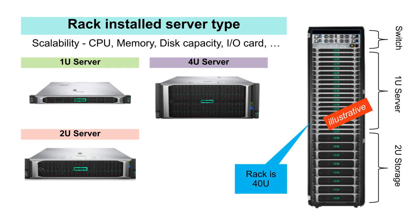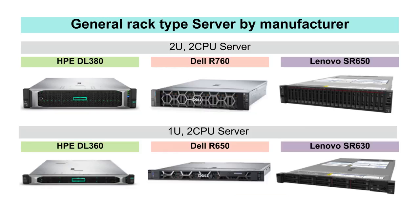If you look at the rack picture on the right, you can see that devices such as servers, storage, and switches are tightly packed in the rack. Among rack servers, 2U and 1U servers are the most widely used, so those servers are produced by numerous server companies. In the case of 2U servers, up to two CPUs are usually installed, and companies such as Hewlett-Packard, Dell, and Lenovo produce them under their own model names.